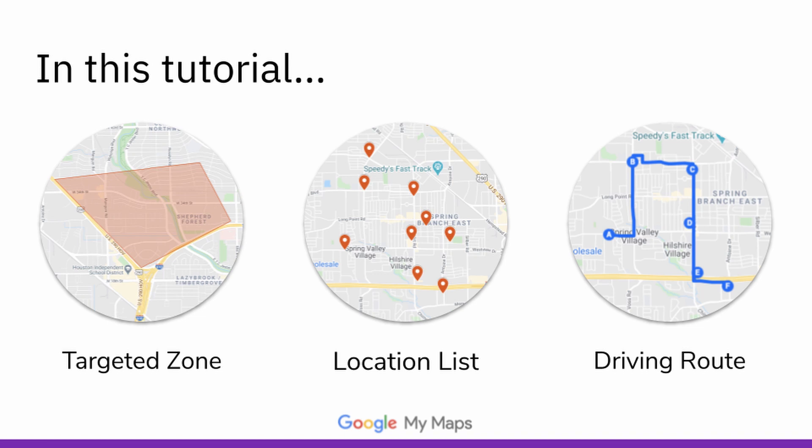We'll go over three different tools in Google My Maps. You'll learn how to create targeted zones, a pins on a map list of locations, and driving routes so you can effectively plan out your sign placements and then communicate that plan with your team. Each tool has its own advantage, so make sure you stick around until the end of this video to become a pro at using all three.